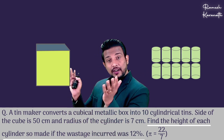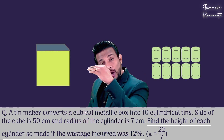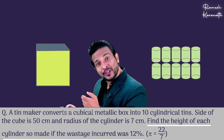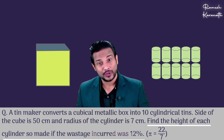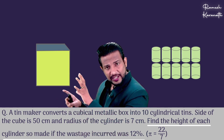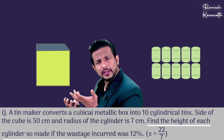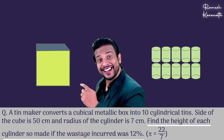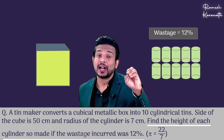When we make the curved surface area of a cylinder, there is no wastage because it is rectangular in shape. But when you make the top and base, you make circles. When you cut the circles from the sheet, you will have wastage. Practically, this is the actual difficulty of the tin maker. In this process, 12% wastage is incurred.